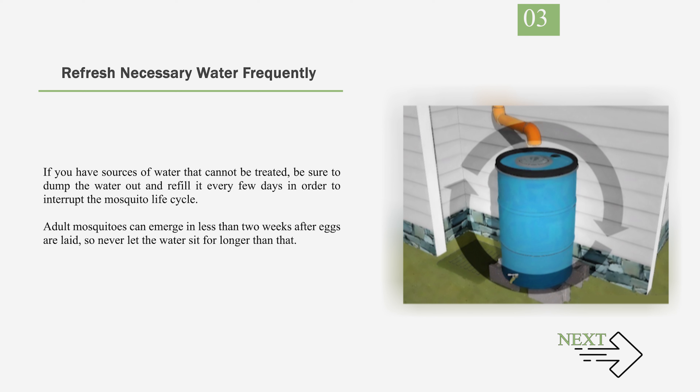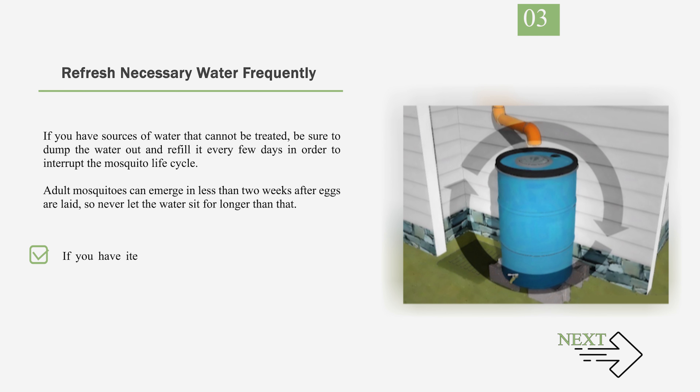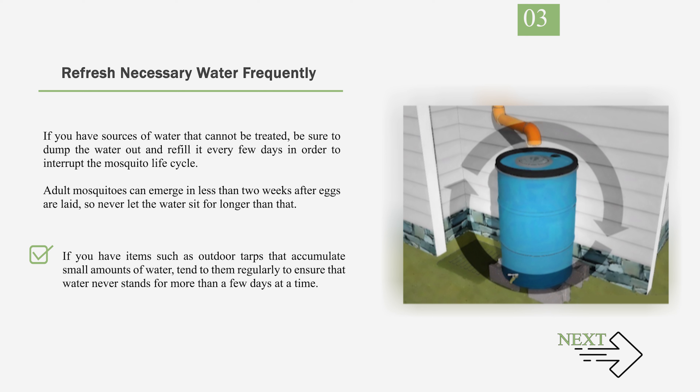Adult mosquitoes can emerge in less than two weeks after eggs are laid, so never let the water sit for longer than that. If you have items such as outdoor tarps that accumulate small amounts of water, tend to them regularly to ensure that water never stands for more than a few days at a time.